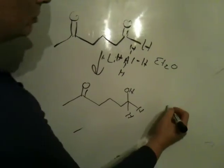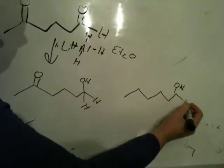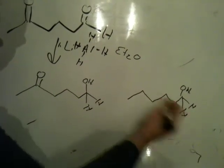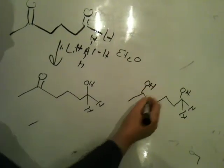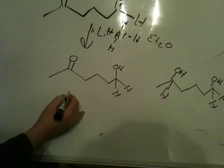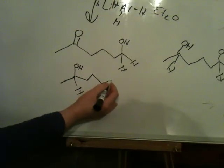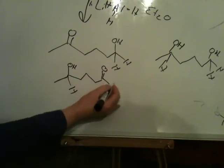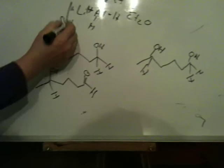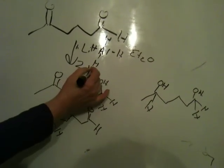Even if you could somehow control the equivalents, you would get both reductions. Some molecules would have both groups reduced, like this. Some molecules would have just the ketone reduced, like this. Okay? So you'd lose control.